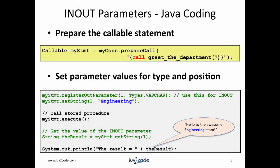To use in and out parameters, we prepare the call as before, using the question mark as a parameter placeholder. Then we register the parameter as an out parameter — this supports in/out — and we also specify the type. Since we are passing in a string, we make use of Types.VARCHAR. The Types interface is defined in the java.sql package. Then we execute the stored procedure. Once execution is complete, we can get the value of the out parameter, retrieved based on the parameter position. Remember that params are one-based. This gives us the output from the stored procedure, and we can display it accordingly.